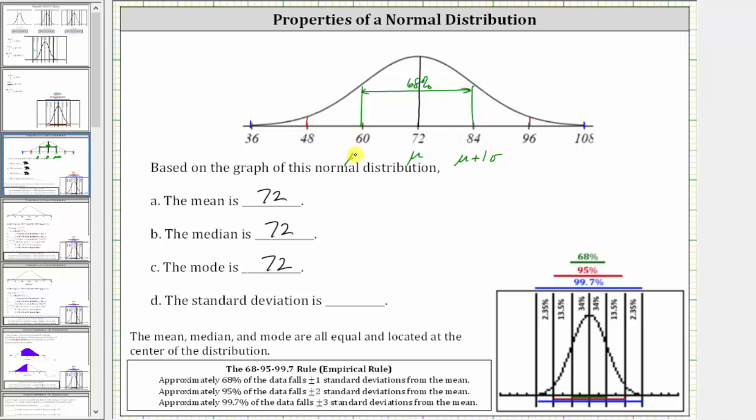And 60 must be equal to mu minus one standard deviation, or minus one sigma. And the numbers are nice here. Notice how to go from 72 to 84, we have to add 12, and therefore the standard deviation must be 12.